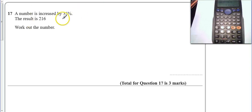Okay, this is what we call the reverse percentage question number 17, because we know the answer after it's already gone up by 35%. So I know that the original number, 100% plus 35 is 216.